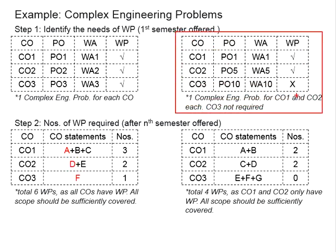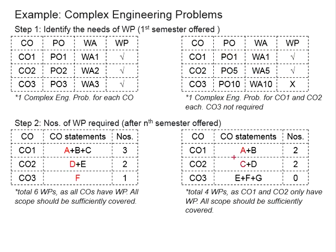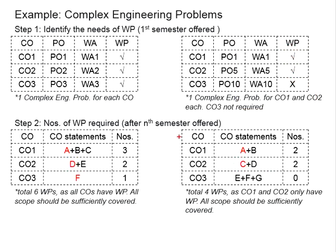Coming to the second course, the relevant components are outlined here. Only CO1 and CO2 require complex engineering problems. In the first semester, you have components A and C in place — it is not fully complete yet. In the following semester, you add complex engineering problems for B and D. So in the first semester you have two complex engineering problems; make sure the existence of those. By the second semester onwards, a total of four complex engineering problems are in place, covering all necessary scopes. Since CO3 does not have a Washington Accord requirement, you do not have to produce any for CO3.